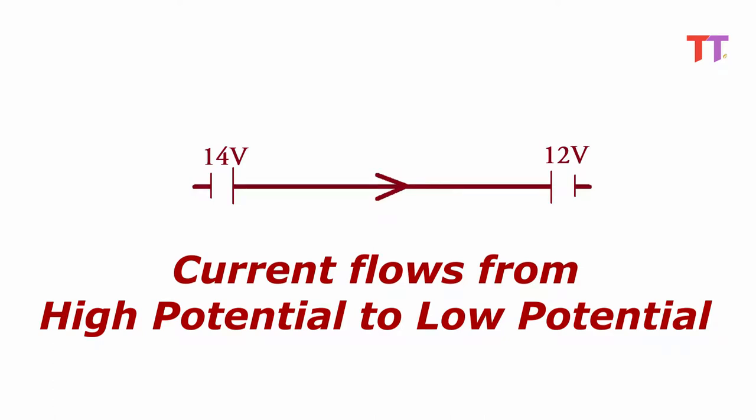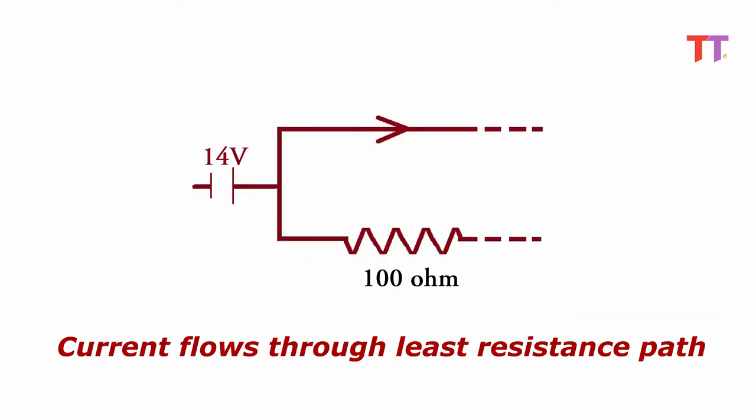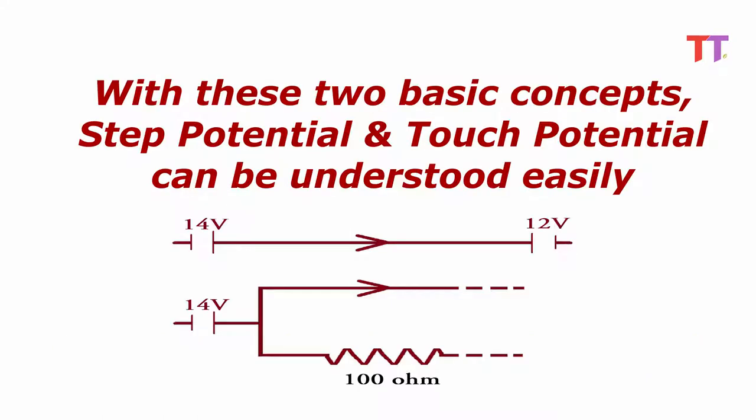As we know, current flows from high potential to low potential. Also current flows through the least resistance path. With these two basic concepts, step potential and touch potential can be understood easily.